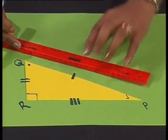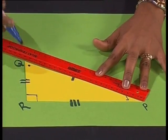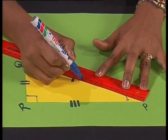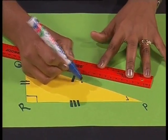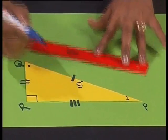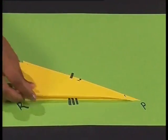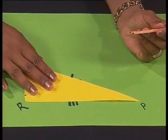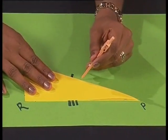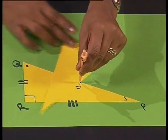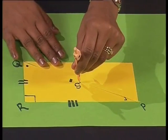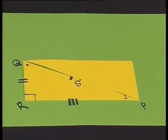Now we have chosen the midpoint of line QP to be our point of rotation. So let's find the midpoint of line QP and mark it as point S. Let's fix the triangle at point S and rotate it through 180 degrees. Let's label this new point T.